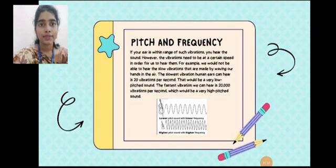Then pitch and frequency. If your ear is within a range of such vibration, you hear a sound. However, the vibration needs to be at a certain speed in order for us to hear them. For example, we would not be able to hear the slow vibrations that are made by waving our hands in the air. While we wave our hands in the air, we can't hear any sound because it is of low frequency, that is 20 kilohertz.